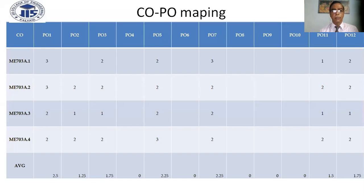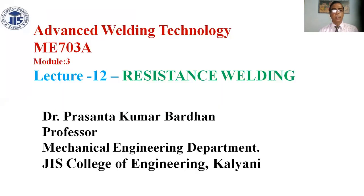The COPO mapping of the subject has 4 course outcomes and 12 program outcomes. This is Advanced Welding Technology, year 3, module 3, lecture number 12: Resistance Welding.